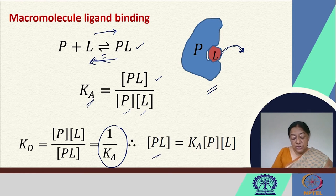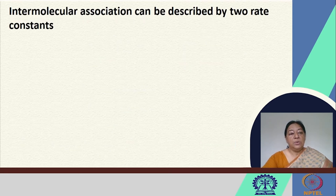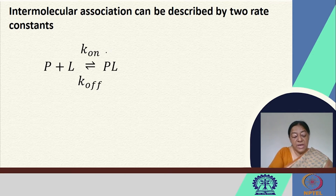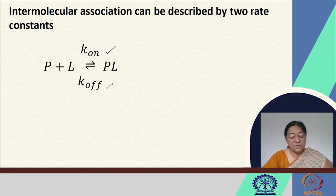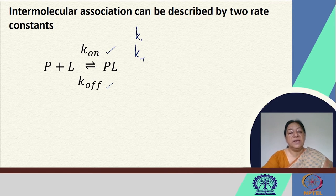When we look at the concentration of the protein-ligand complex, it is a product of the association constant, the protein, and ligand concentrations. The intermolecular association can be described by two rate constants: Kon for the forward reaction and Koff for the reverse reaction, indicating whether the ligand is on or off the active site. These are also referred to as K1 and K-minus-1.